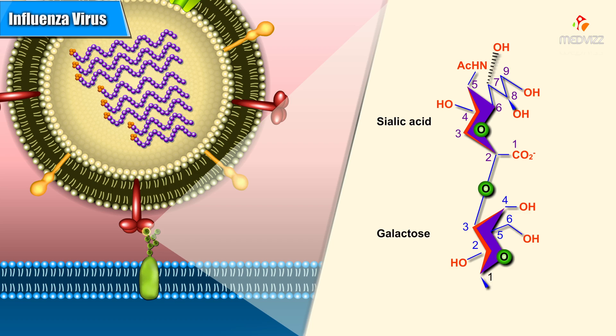The sialic acid can be connected at different positions on galactose. This example shows an alpha-2-3 linkage between the number 2 carbon of sialic acid and the number 3 carbon of galactose.